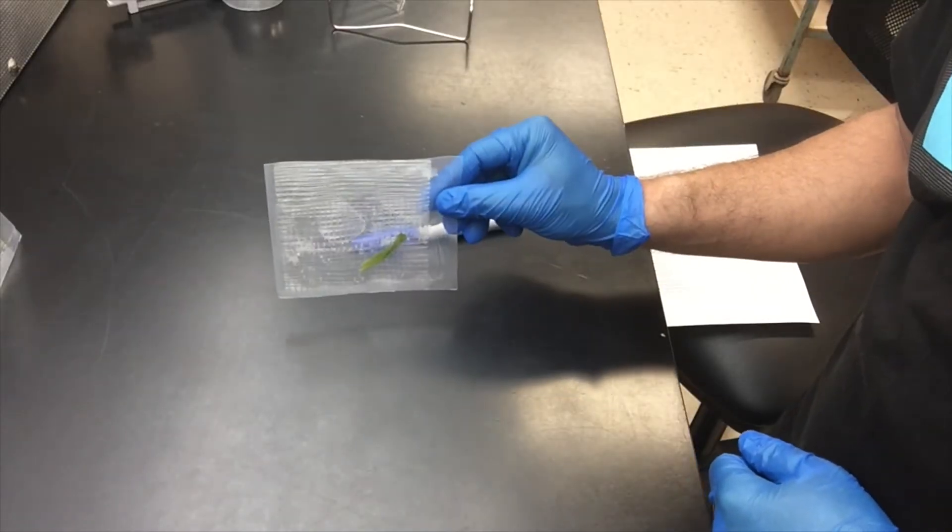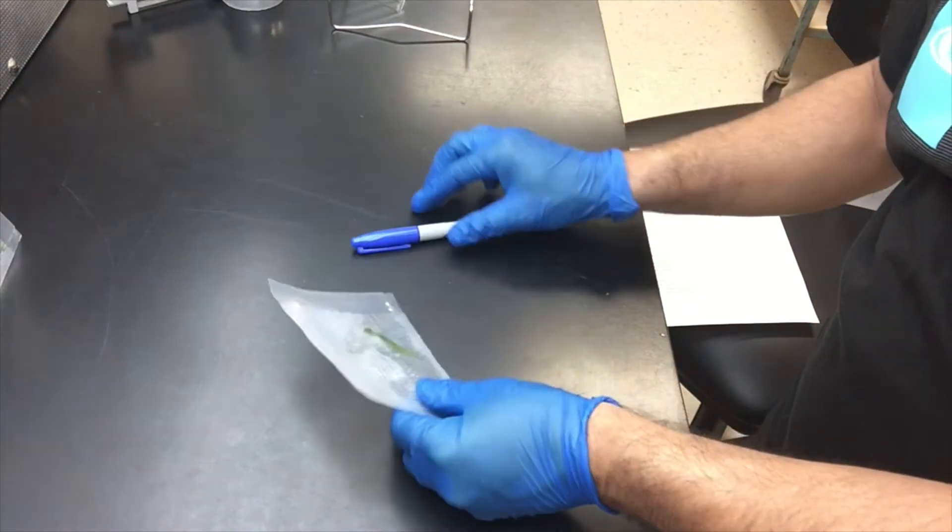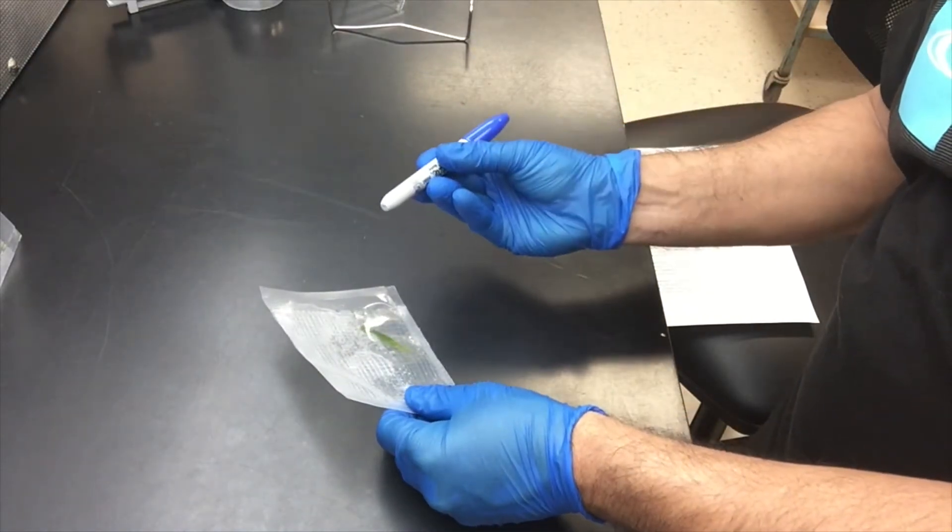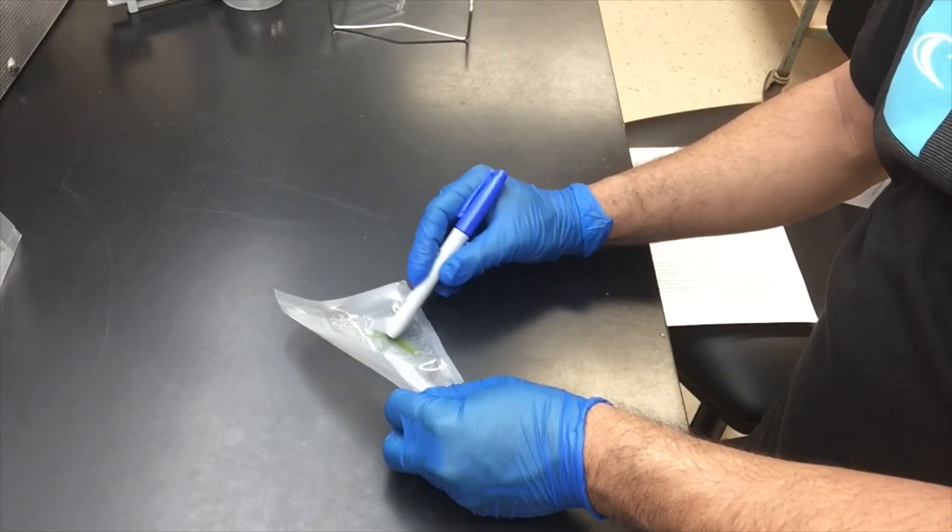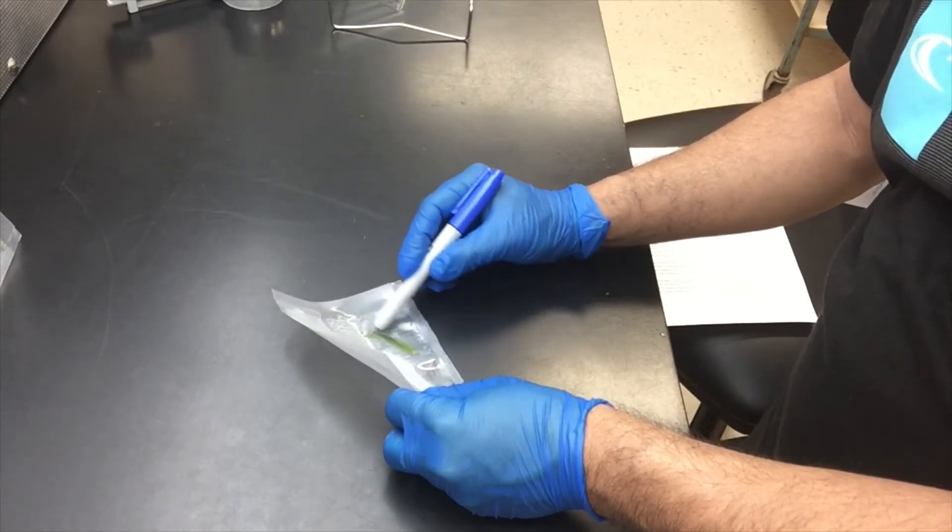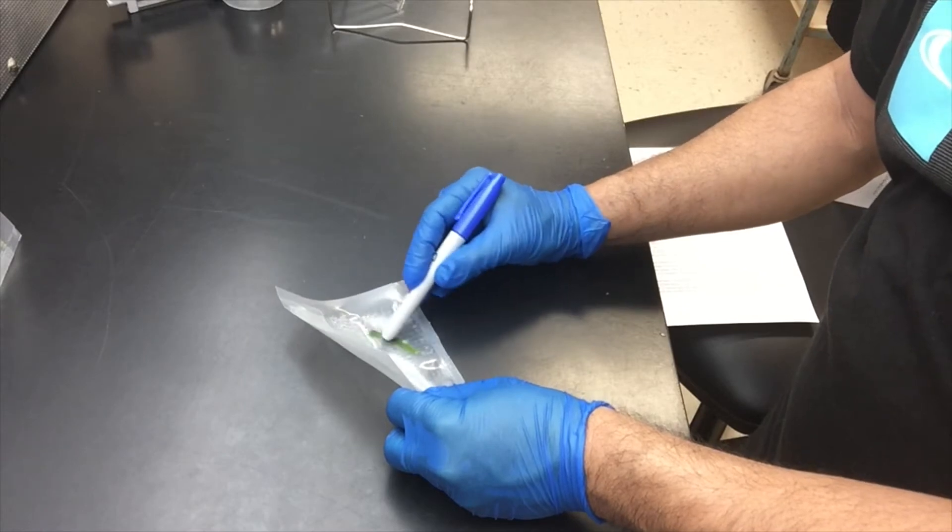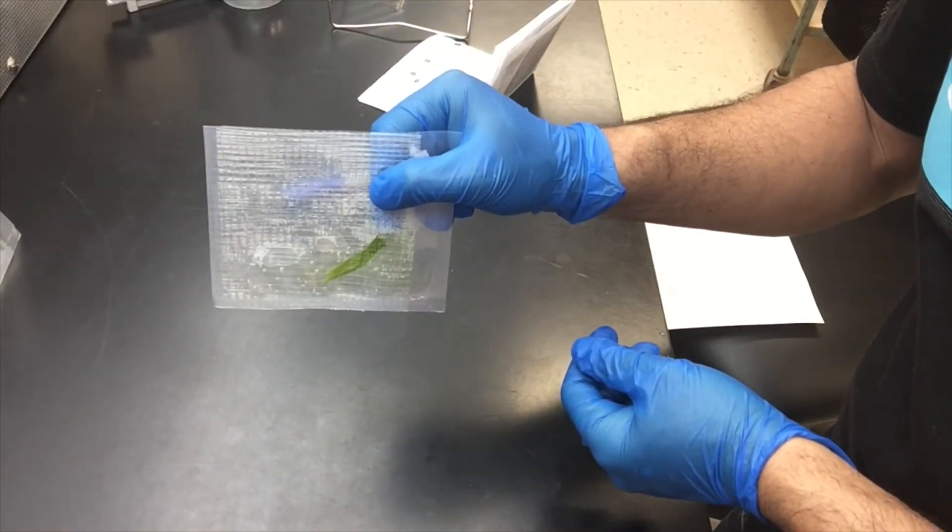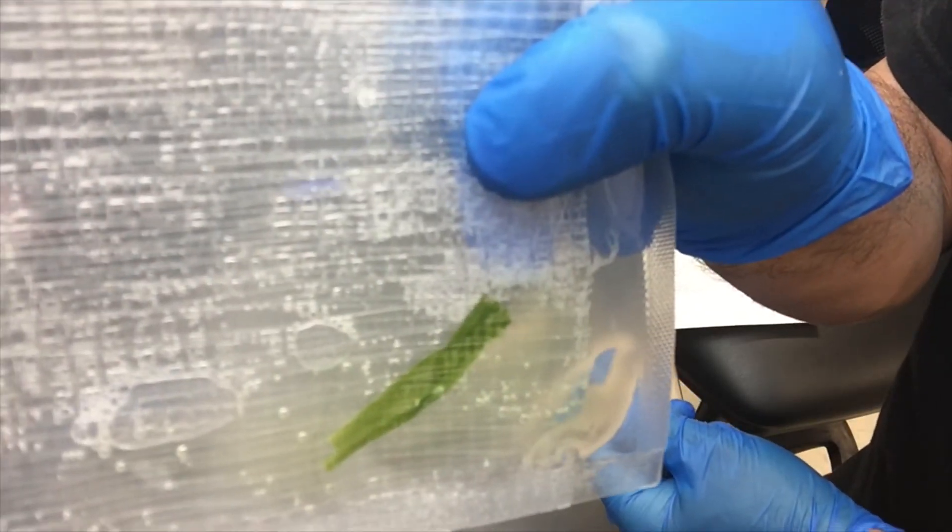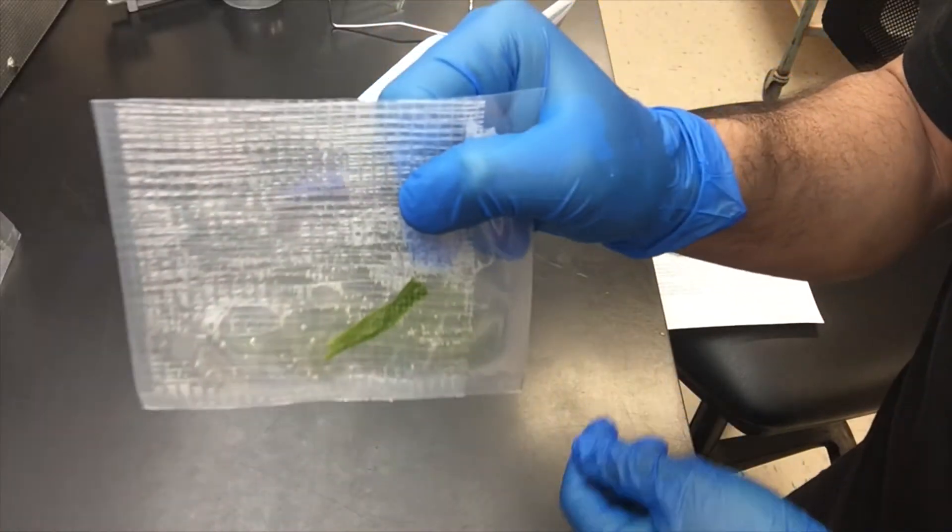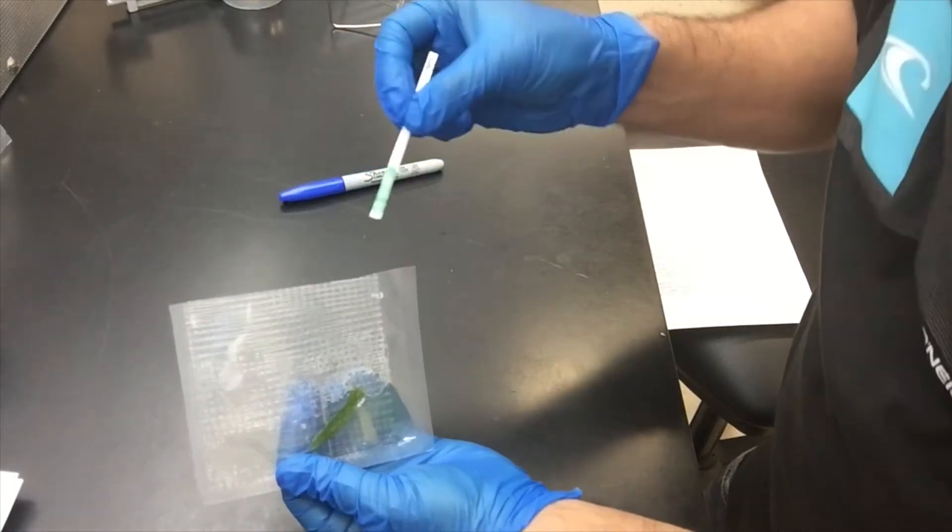Extract the sample with a blunt object, for example a sharpie in this case. Be gentle during extraction. Avoid tearing the bag and producing excess foam. You can see the homogeneous light or dark green colored solution. Allow the solution to settle for 2 to 3 minutes before inserting the immunostripe.